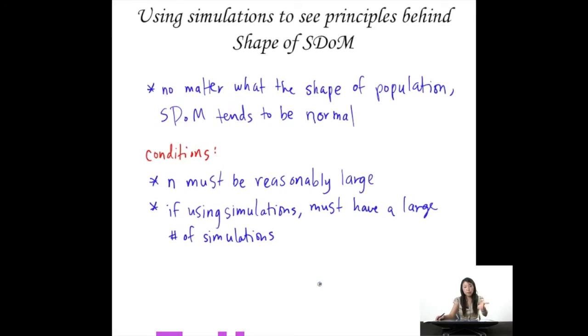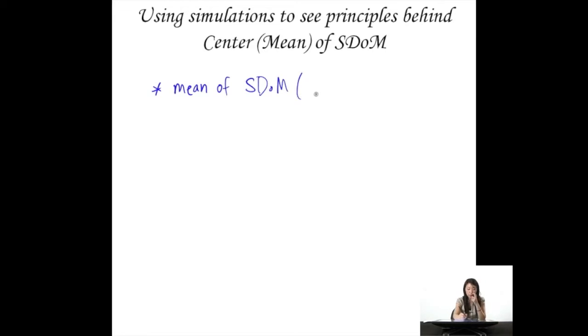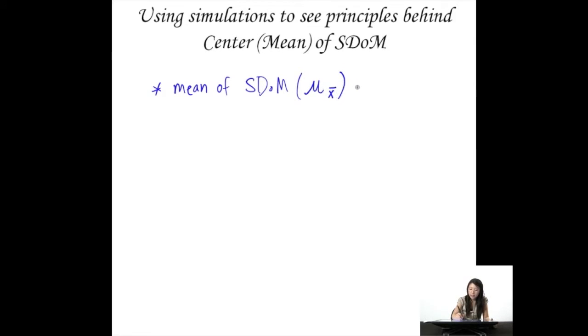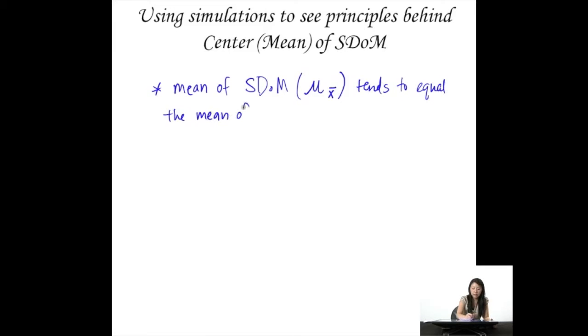We learned some things from using simulations about the shape of the SDOM. What about the principles behind the center, or mean, of the SDOM? One of the things we found was that generally the mean of the SDOM — shown as mu sub x-bar, because it's the mu of a bunch of means — tends to equal the mean of the population, symbolized by just plain old mu.